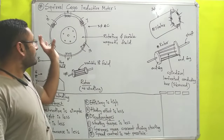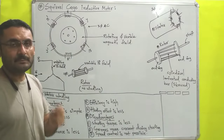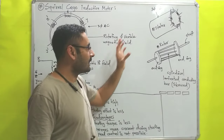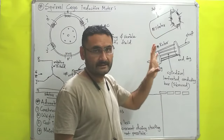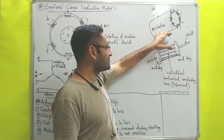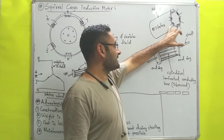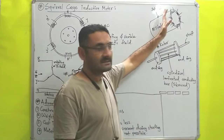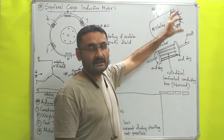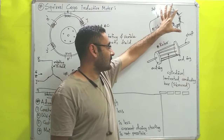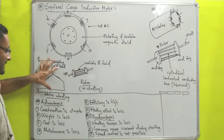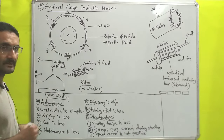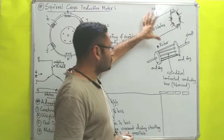The squirrel cage induction motor is a type of three-phase induction motor. That motor has two parts. The first part is an outer part which is in the form of a hollow cylinder and which is the stationary part, known as the stator. On the inside of this stator, windings are there — copper coils wound around it — and those windings have star connection or delta connection. Here for the stator winding I have considered a star-connected three-phase winding, which is known as the stator winding.